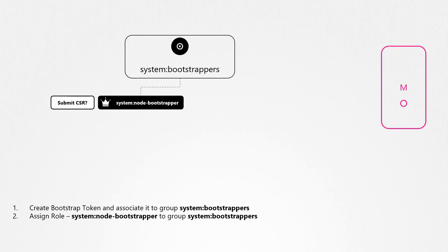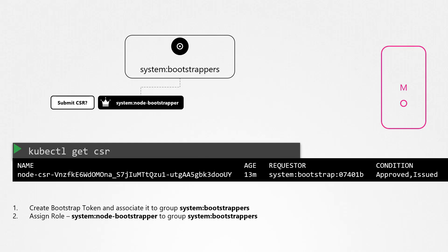Once this permission is assigned, the Kubelet is able to generate a pair of certificates and submit the certificate signing request to the kube API server. At this point, if you run the kubectl get CSR command, you will see a new CSR request come in for this node. You can choose to manually approve it, after which the worker node will fetch the certificate and start using it. But if you have a cluster with thousands of nodes, that's going to be a tedious task.